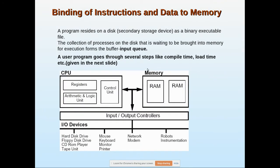In this video we are going to see how instructions are mapped to main memory. First, let's have a look at this architecture. This is the CPU, which consists of internal storage registers, arithmetic logic unit, and the control unit which controls all these components. Then this is the main memory, MMU, which we call the main memory unit.